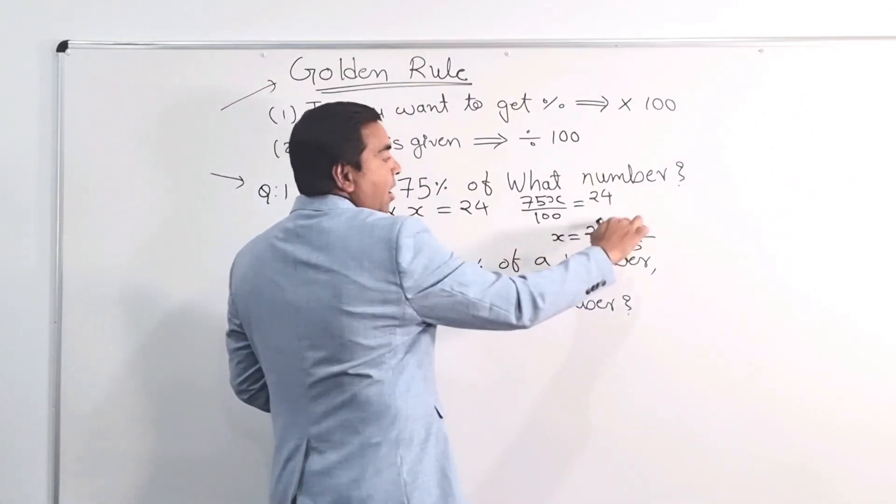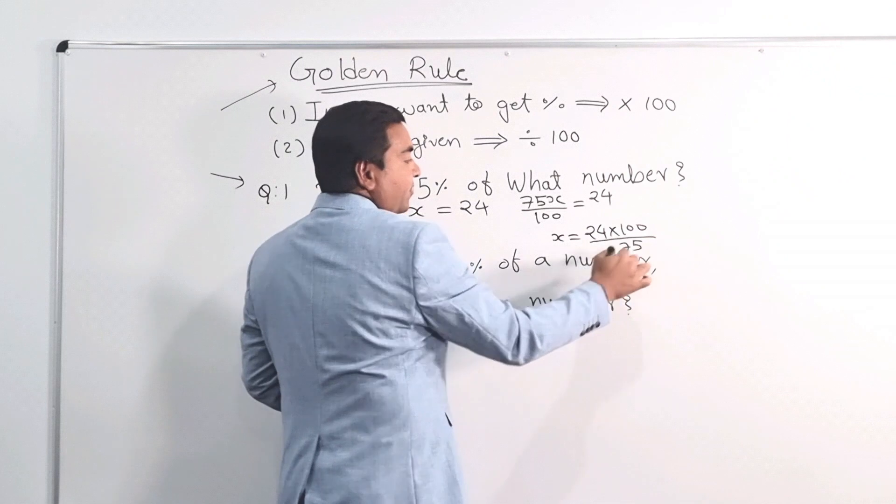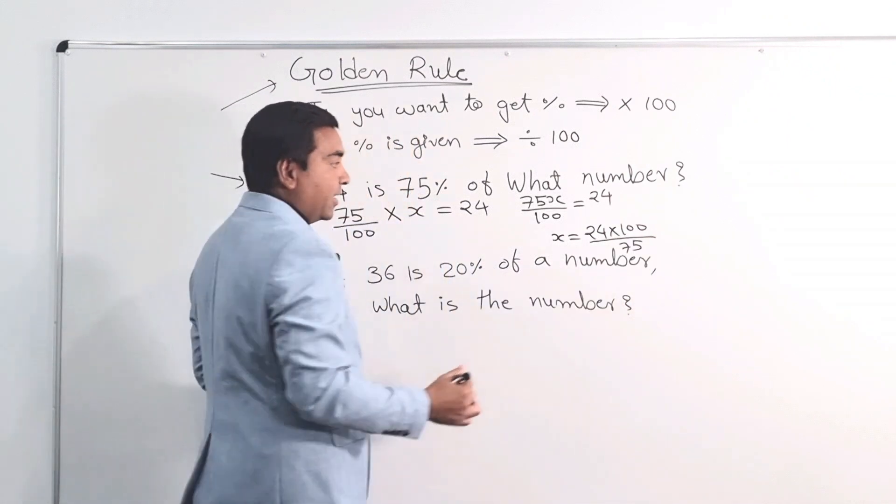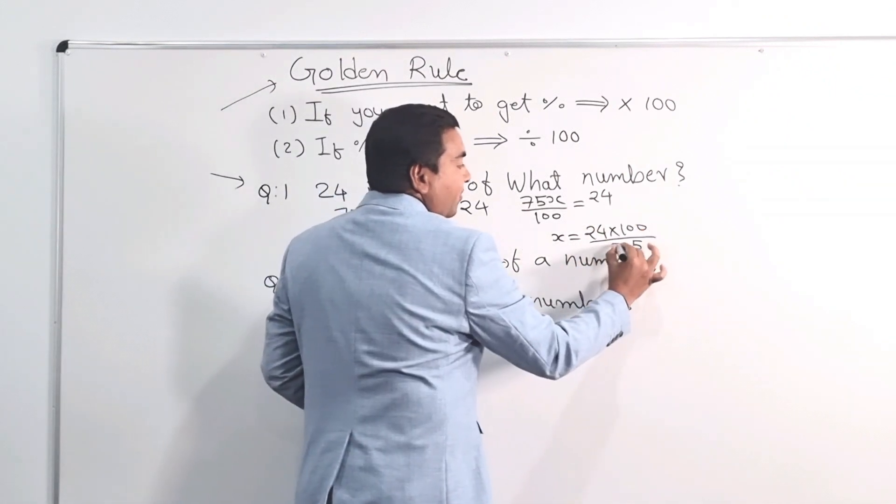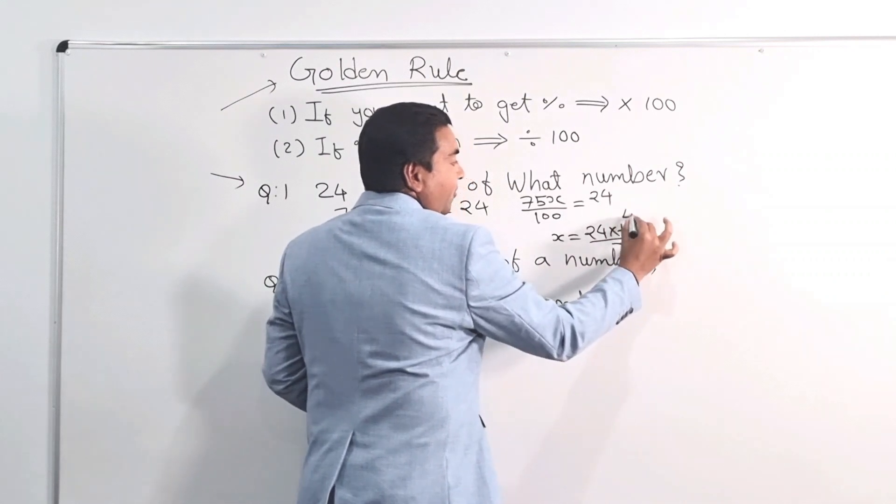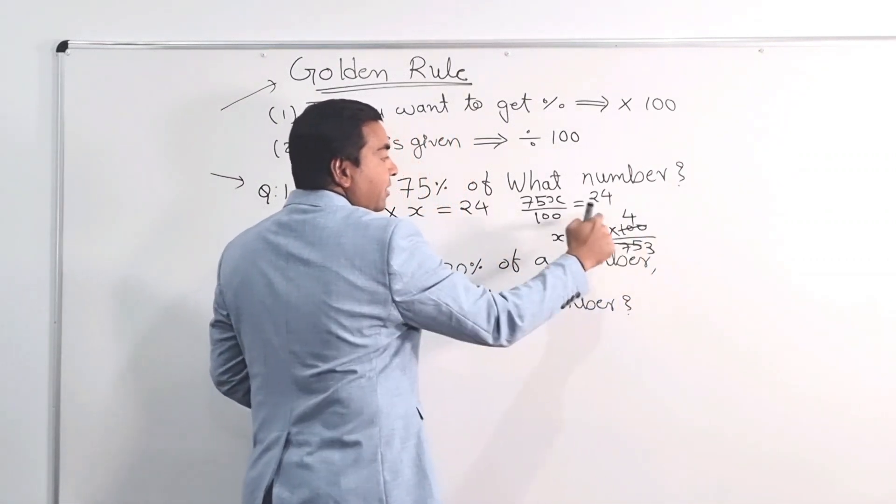Now, I've got 100 here and 75. So I can cut it like 25 is common. 25, 3s are. And 25, 4s are. Now I've got 3 here. I've got 24 here.